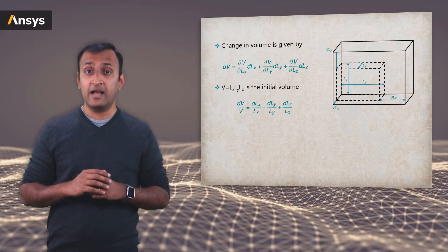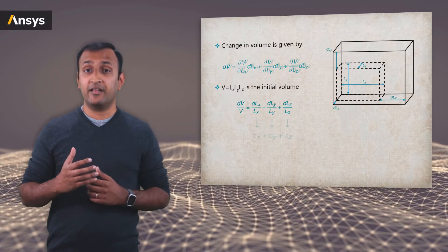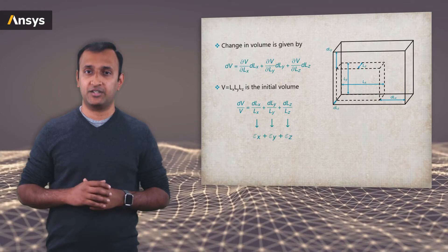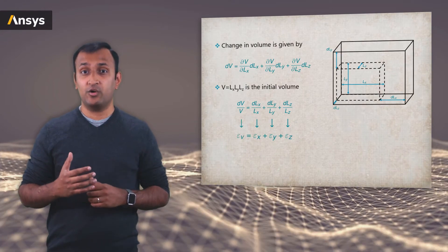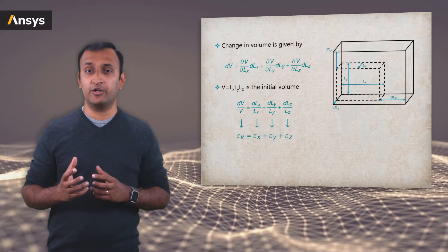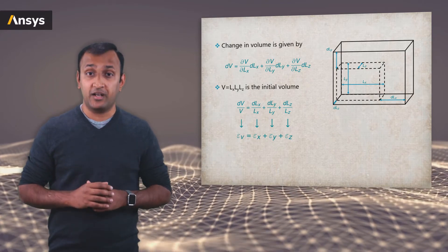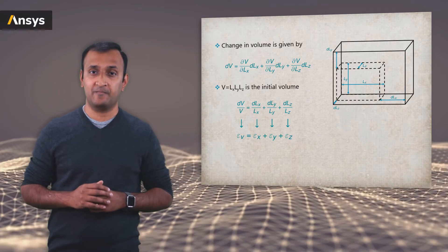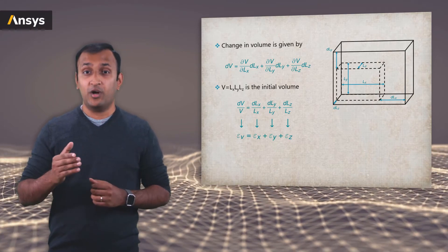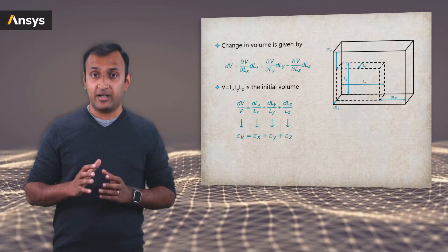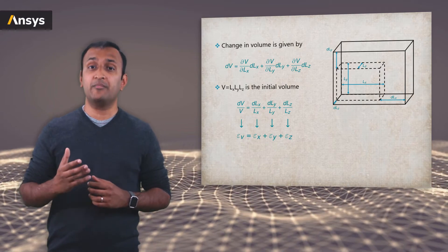Notice that in this new form, these three terms are the normal strains in the three principal directions. And the term on the left-hand side is the ratio of change in infinitesimal volume to the original volume, which is the volumetric strain. So from this equation, the volumetric strain is the summation of all three principal strains.